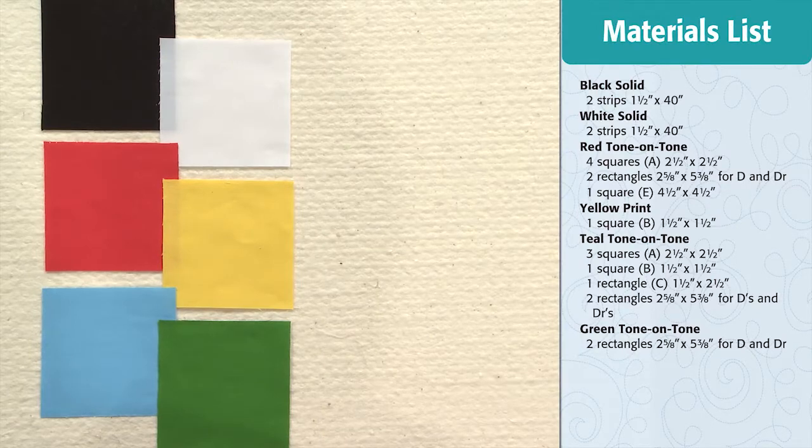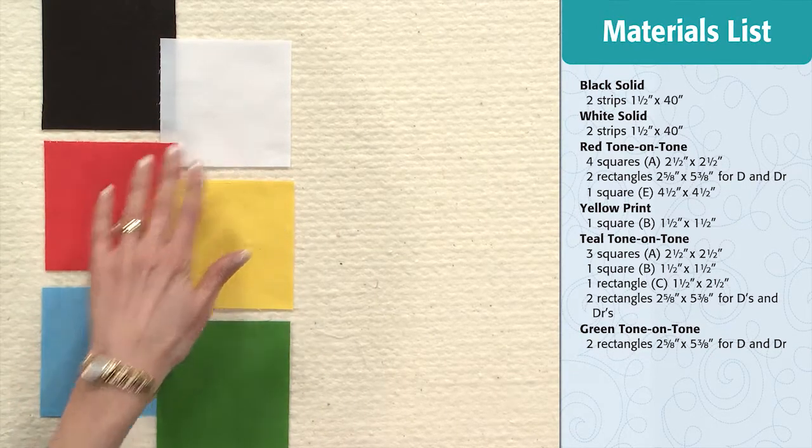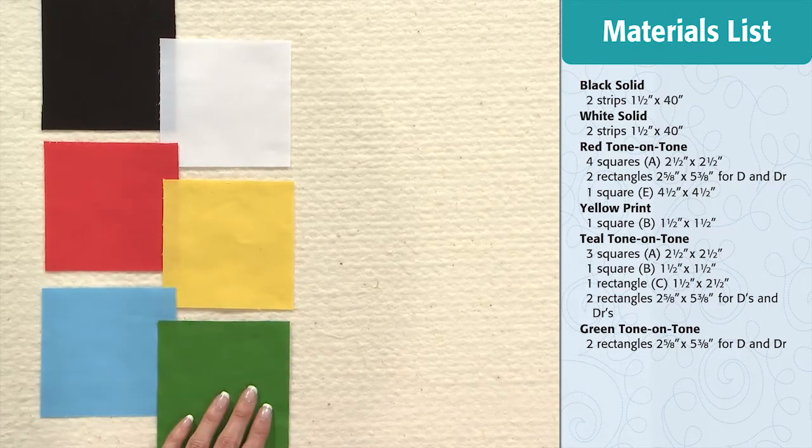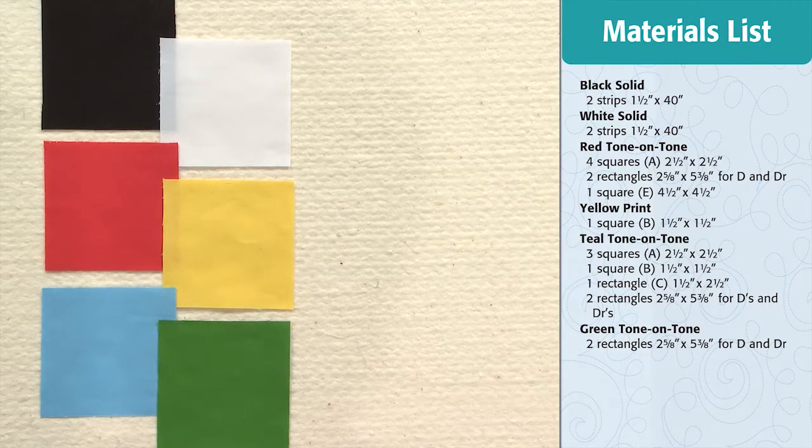For this block you'll need an assortment of solid fabrics: a black, a white, a red, a yellow, a blue and a green. The cutting dimensions for the patches are on the right of your screen. If you need to write these down pause your video.